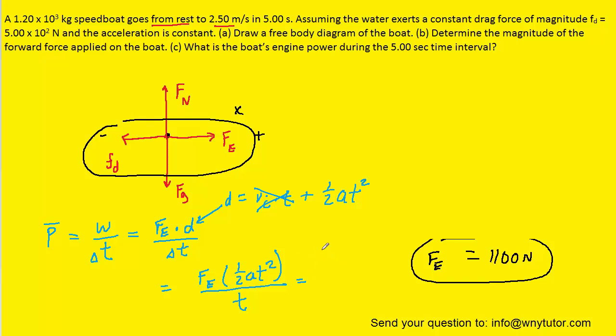And then the acceleration, again, was 0.5. The time interval was the five seconds. Don't forget to square it up here in the numerator, and then we'll divide by five.